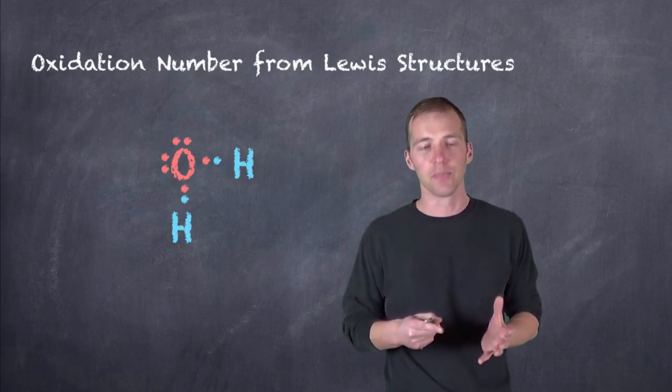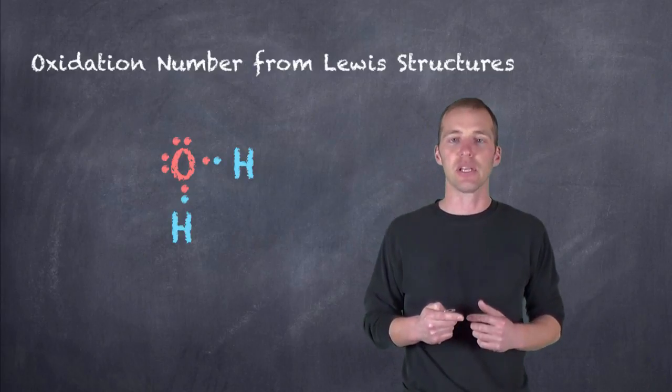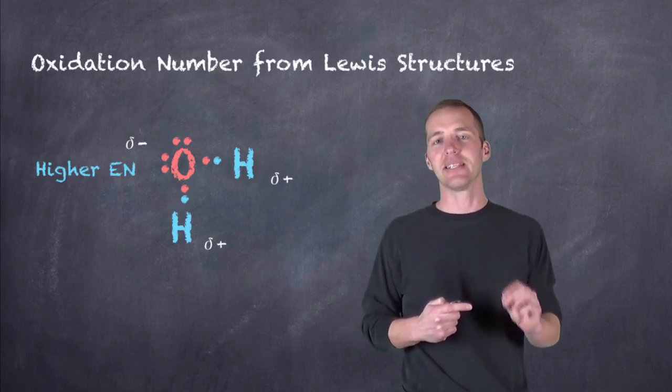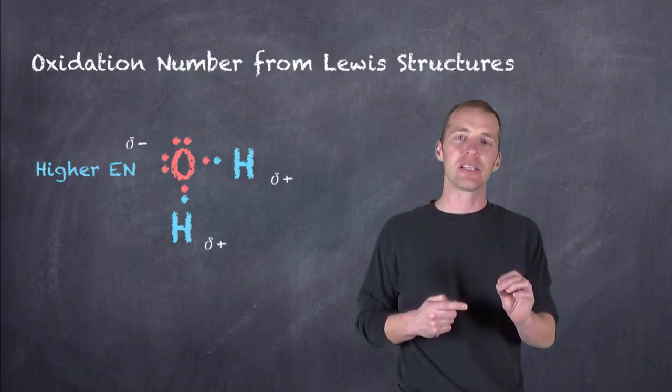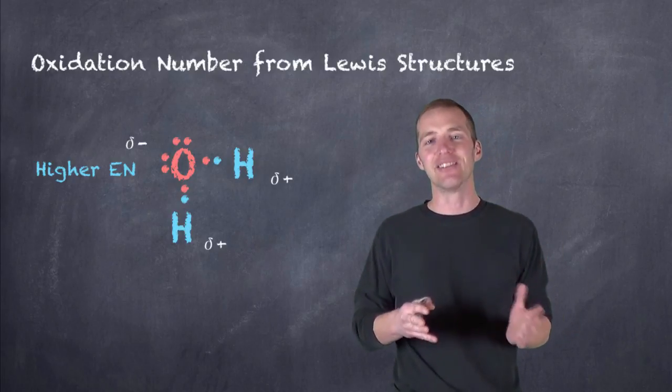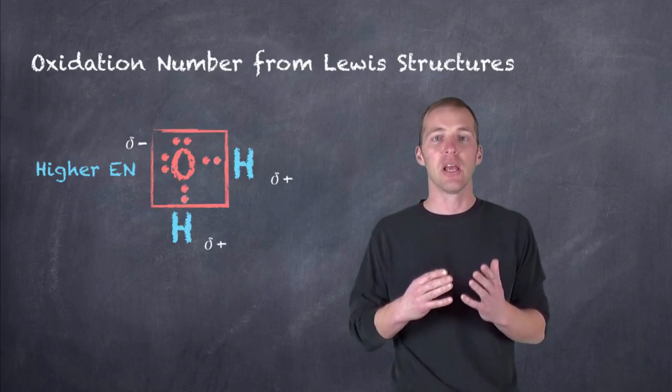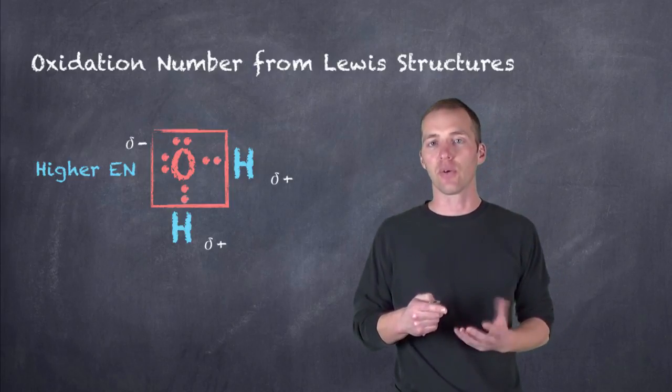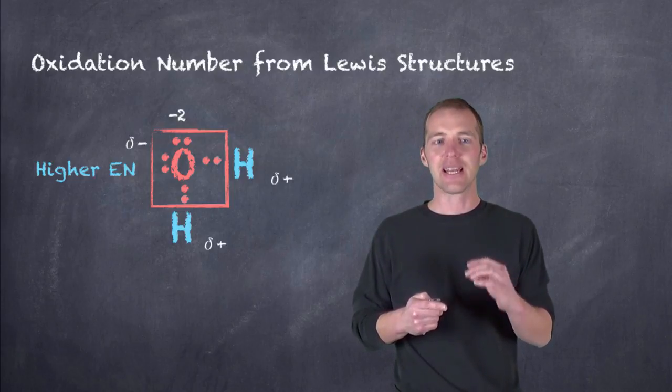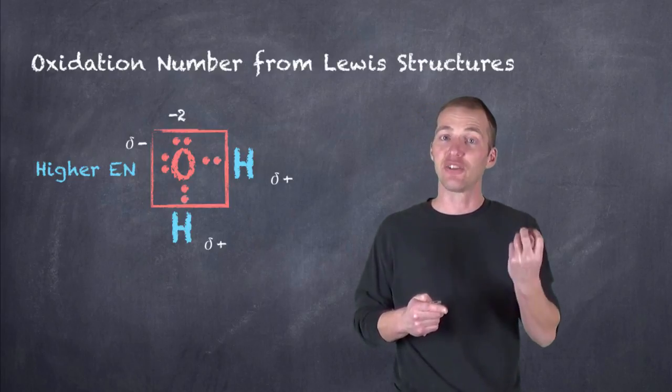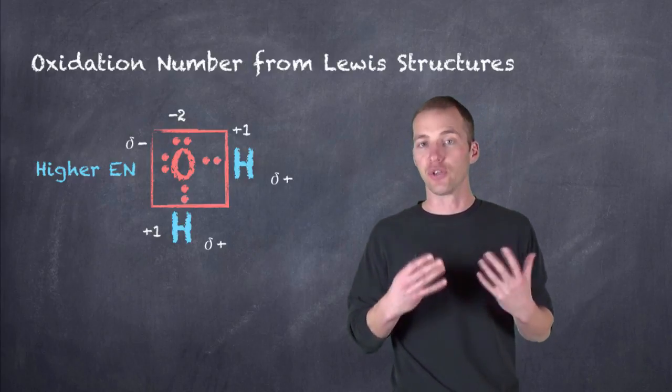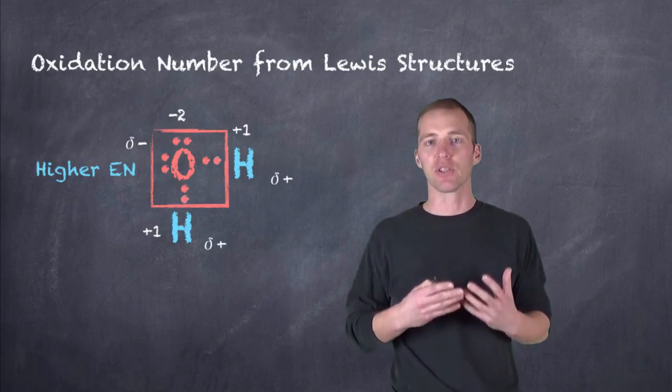So if we looked at just the water molecule, we could see that we have six valence electrons for the oxygen, we have one valence electron for each of the hydrogens. But since the oxygen has a higher electronegativity, the way that we assign oxidation numbers is we say that those electrons in the oxygen-hydrogen bond are assigned towards the more electronegative element. So since oxygen now has eight electrons assigned to it, it now has an oxidation number of minus two because it's been assigned two additional electrons. Each of the hydrogens have effectively lost one electron to the oxygen, the more electronegative element, and so they have oxidation numbers of plus one.